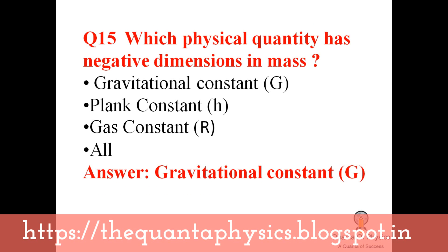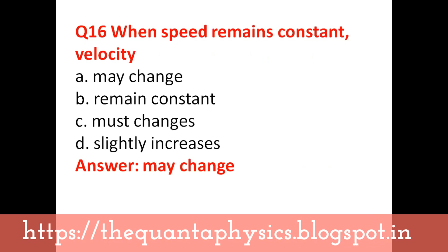Which physical quantity has negative dimensions in mass? That is the gravitational constant — this is an important question. When speed remains constant, velocity may still change, and this occurs when direction changes. When speed is constant but direction is changing, velocity is changing.